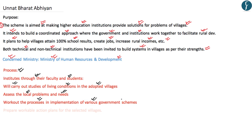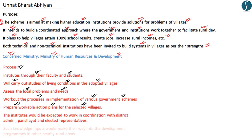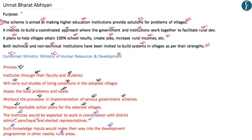After assessing local problems and needs, institutions prepare a workable action plan for implementation of government schemes to solve problems in their adopted village. These educational institutions are expected to work in coordination with the district administration, local panchayat, and elected representatives. This coordination ensures that the knowledge prepared by institutions feeds into development programs in other nearby rural areas.